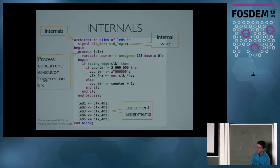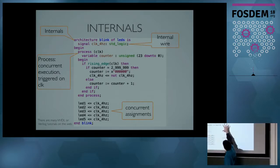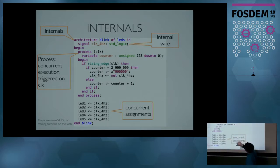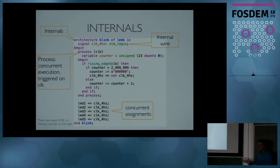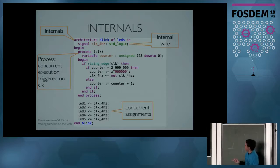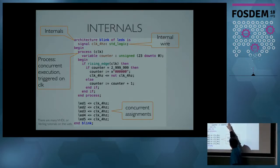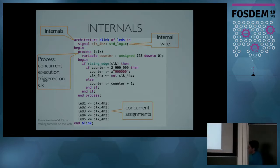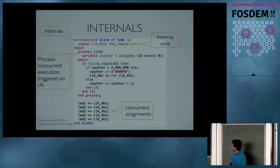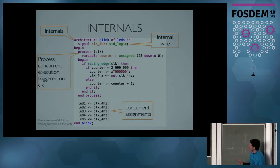And this is the internal of the circuit. It has one main process, which is some computation within a flip-flop. 'If rising edge' means we will do the computation only on the rising edge of the clock. The computation is just a counter, and when it reaches three million it is reset to zero and the LED is flipped. So this is just a way to make the LED blink — not too quickly, otherwise you can't see anything, and not too slowly, otherwise you can't wait for it to flip.